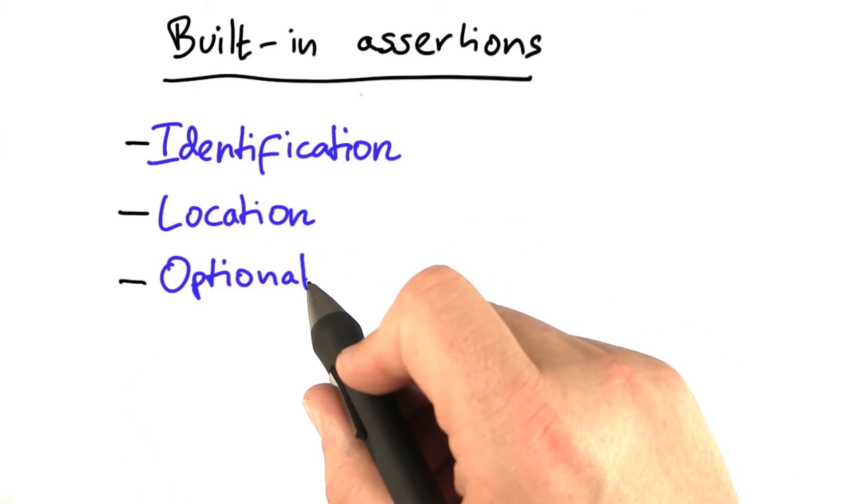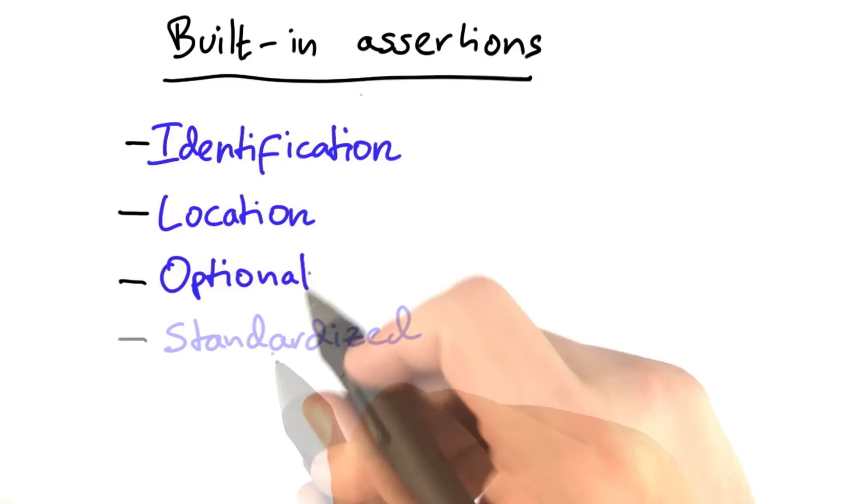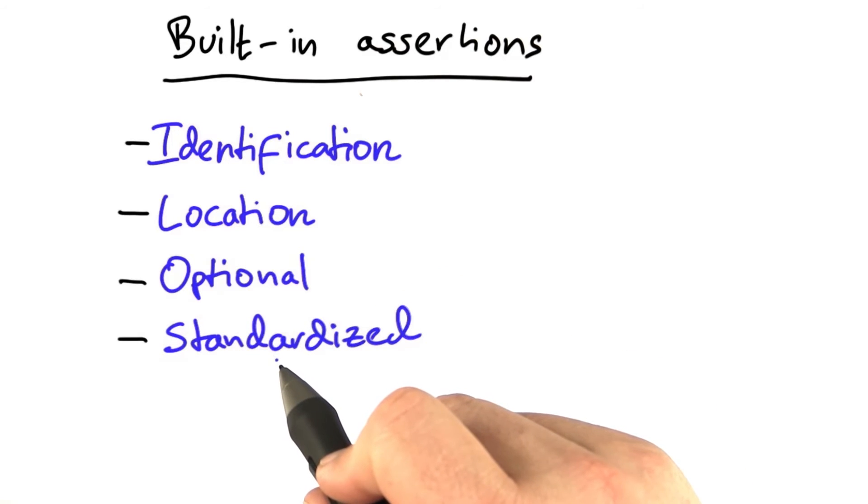They're optional, meaning that they can be turned on or off, although turning assertions off is mostly a bad idea, which we will discuss later. And finally, they're standardized, meaning that everybody can immediately recognize an assertion as such, because they always take the same form.